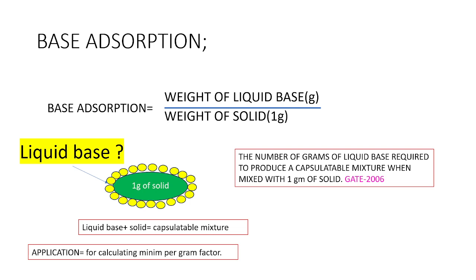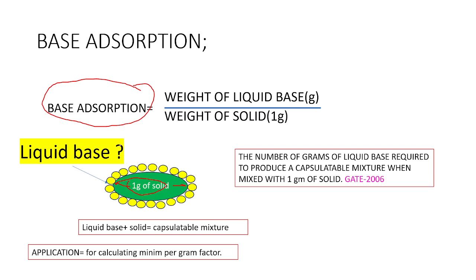The topic is base adsorption and minimum per gram factor. Base adsorption is defined as: we take 1 gram of solid, then how much amount of liquid base — the yellow colored thing — is required to produce a capsulatable mixture. Both the 1 gram of solid along with the liquid base together form what we call a capsulatable mixture.